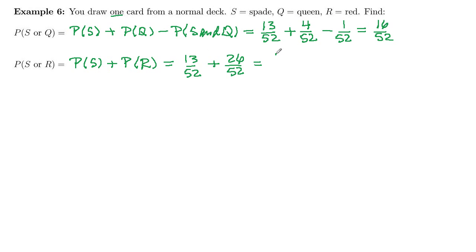And adding our numerators, 39 out of 52, or 0.75, or 75% if you want a percentage.